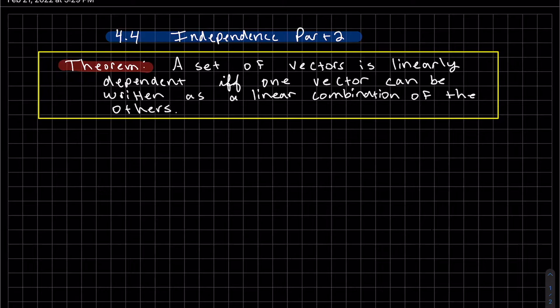We'll start off with this theorem that says if we have a set of vectors, they are linearly dependent if and only if one of the vectors in the set can be written as a linear combination of the others.